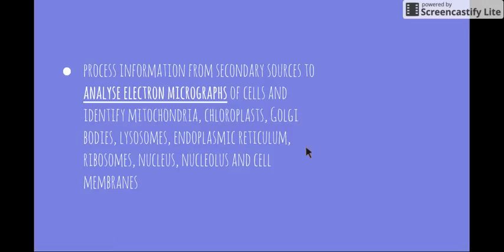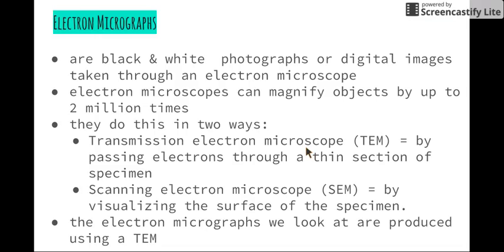Welcome to the next video in the patterns in nature topic. Today we'll be looking at the following dot point: process information from secondary sources to analyze electron micrographs of cells and identify the mitochondria, chloroplasts, golgi body, lysosomes, endoplasmic reticulum, ribosomes, nucleus, nucleolus, and cell membrane.